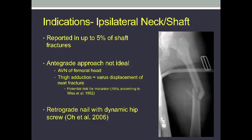The neck fracture is a top priority in these cases because of the potential risk of AVN of the femoral head. There really isn't any consensus on how to fix these injuries in the literature. However, retrograde nailing with a dynamic hip screw or cancellous screws has shown promise.